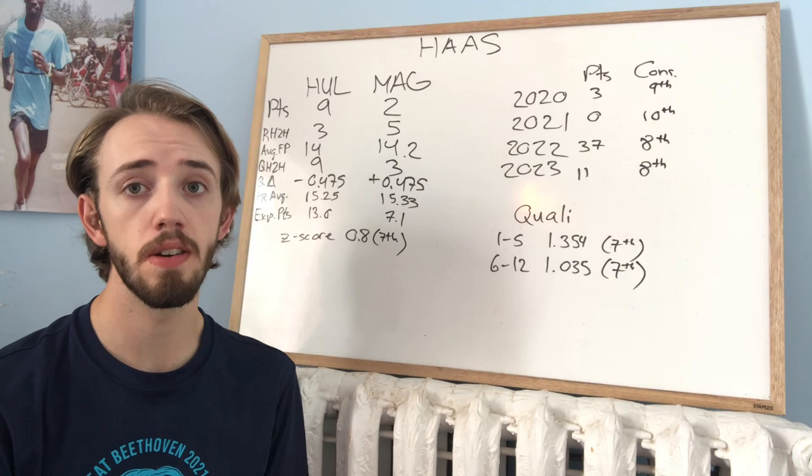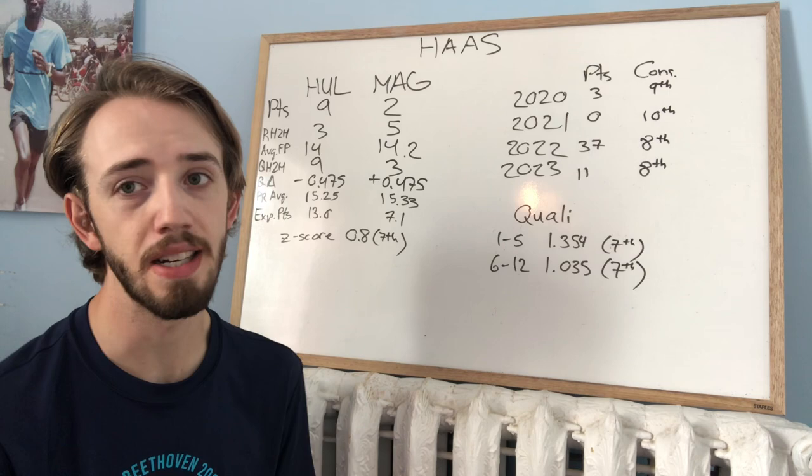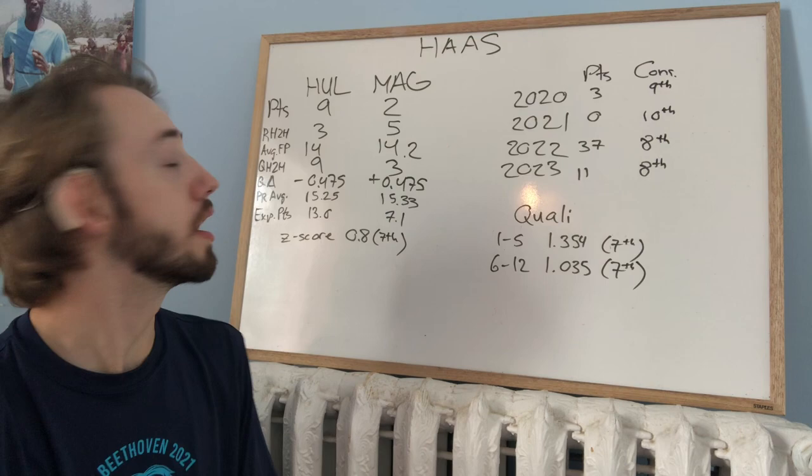Starting right away with the driver head-to-head, Hulkenberg leads the way there, 9 points to 2 over Magnussen. In the race head-to-head however, Magnussen is the one who's come out on top, 5-3 advantage for Magnussen there.